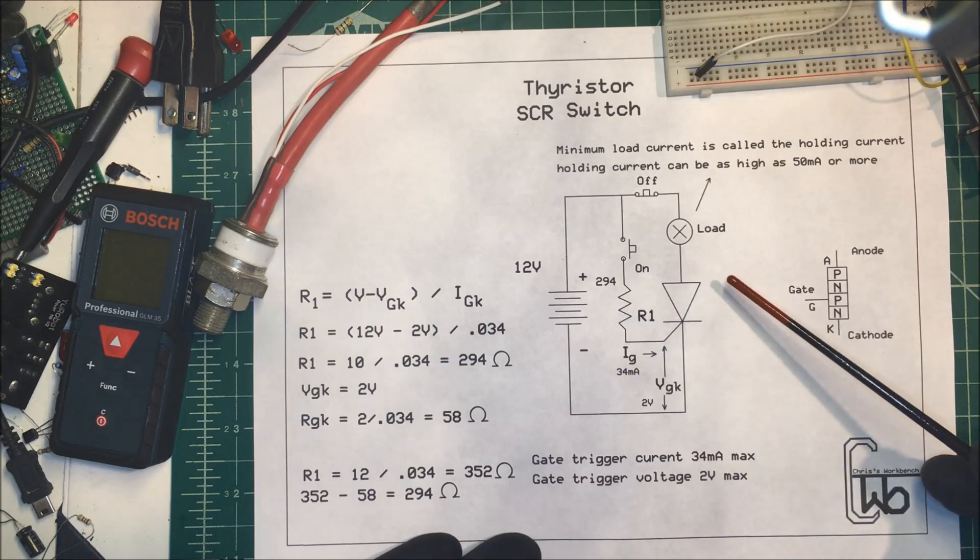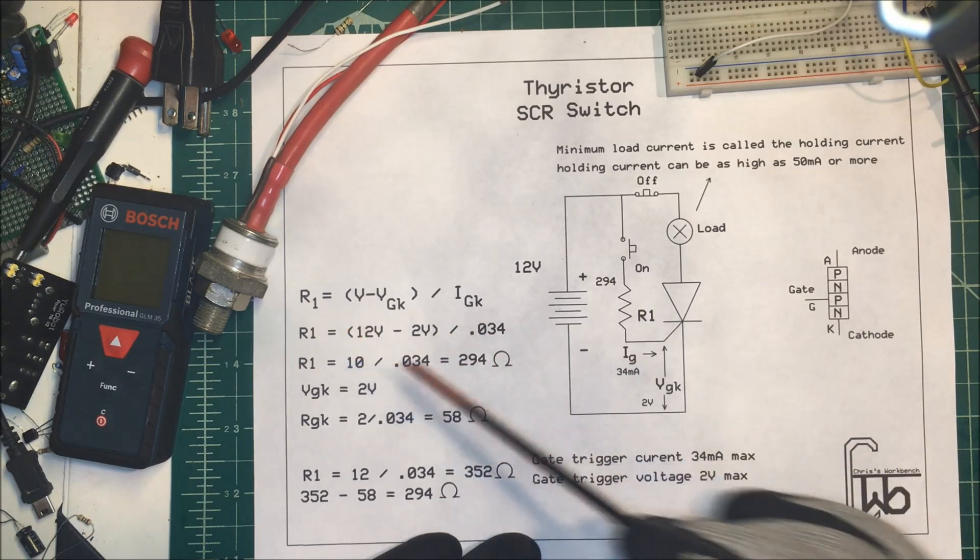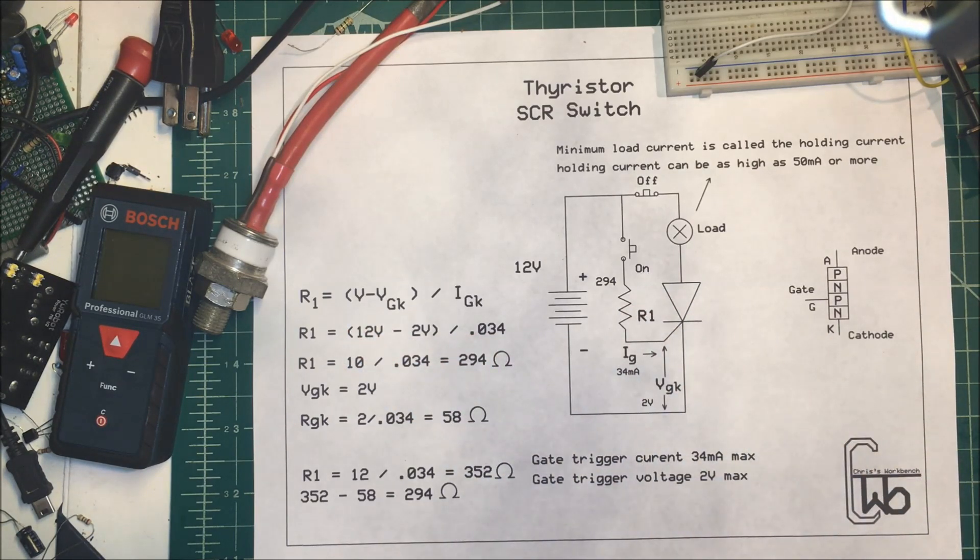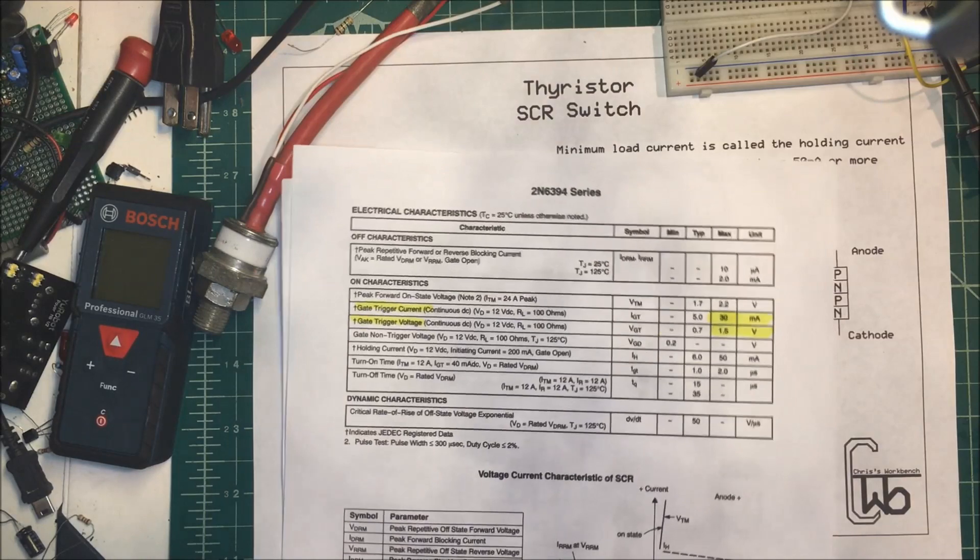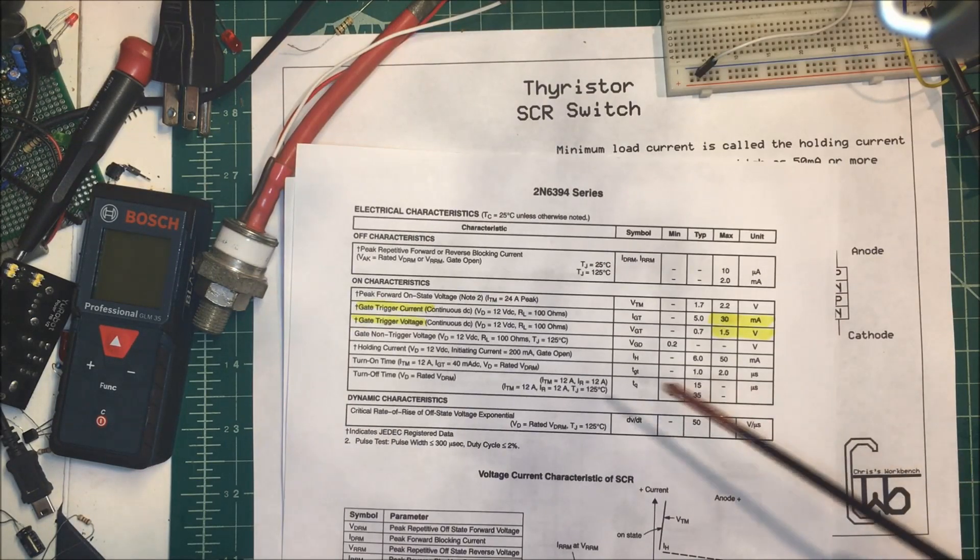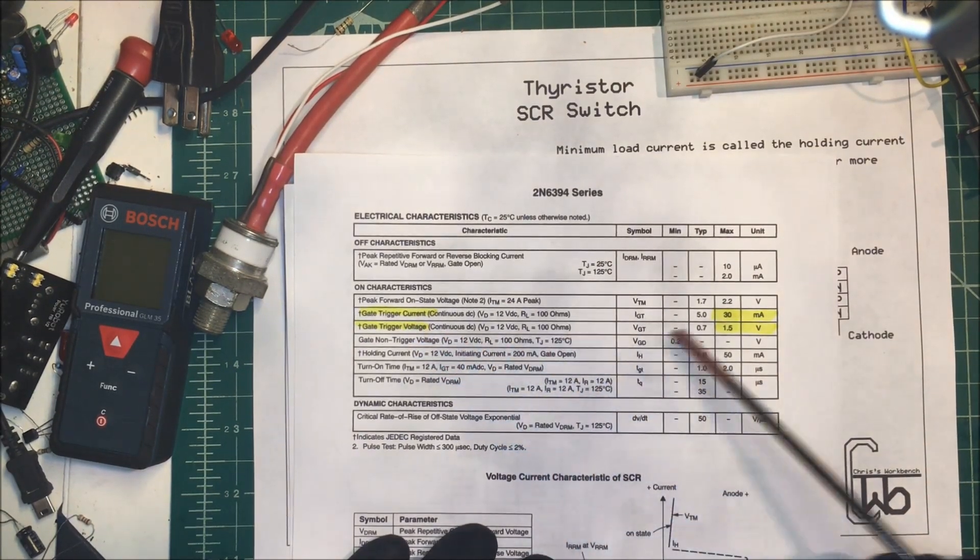So we want to know this R1, this gate resistor here. In the spec sheet, now I have a salvage part here, I'm not sure what part it is, but for a similar unit, the gate trigger current is 30 milliamps.